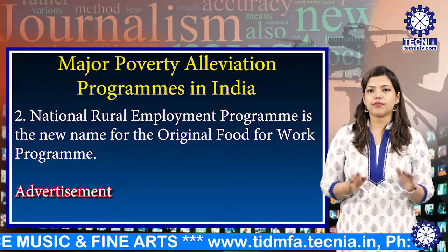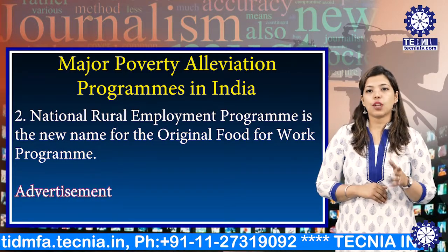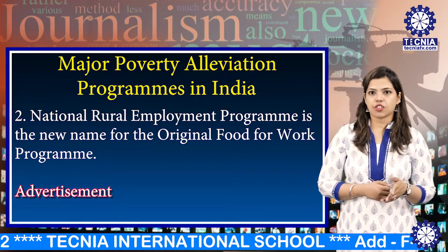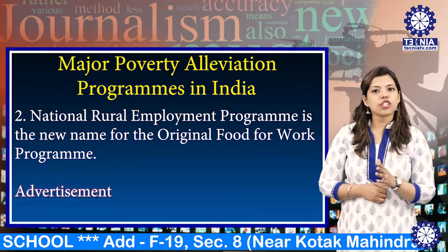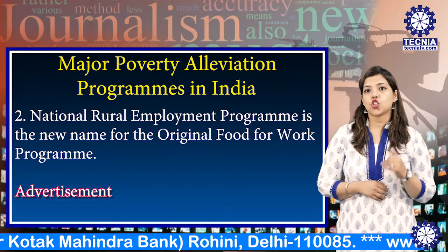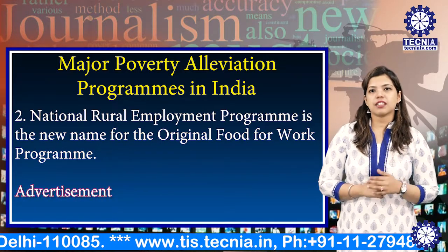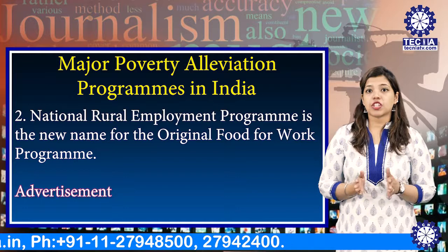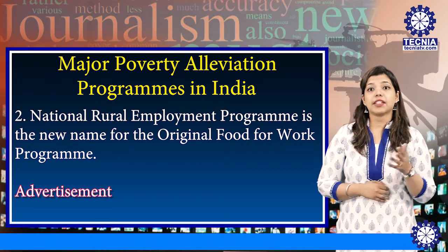The most common works undertaken under the program are development of kutcha roads within the village. The states are required to contribute 50% of the total rural plan expenditure out of their own resources. But what the states have been doing is that instead of pumping new funds, the existing programs of the public works department are shown as work under the NREP. In some cases, the funds are spent on construction involving high-cost material components, defeating the basic purpose of utilizing locally available material and labour.